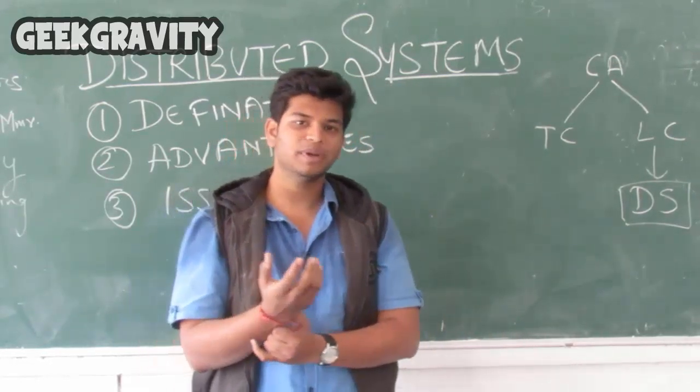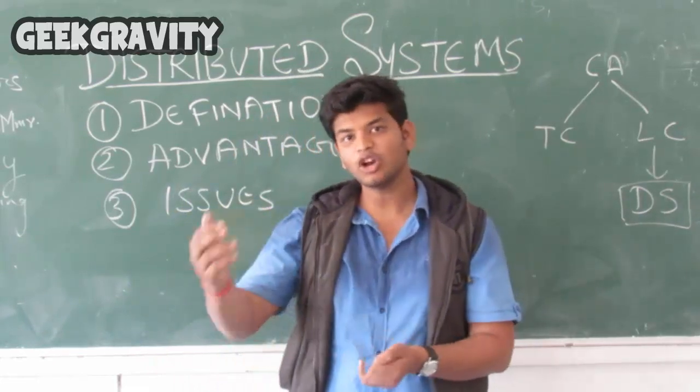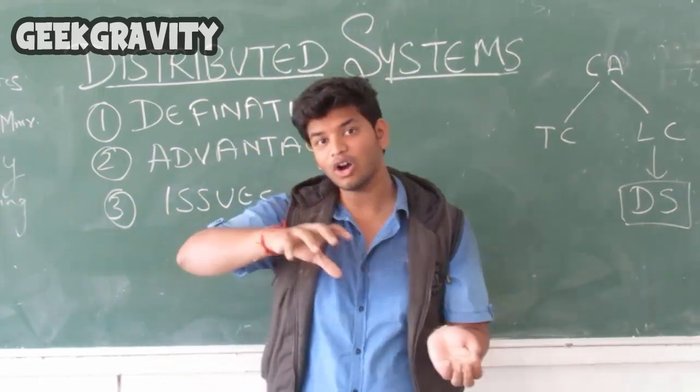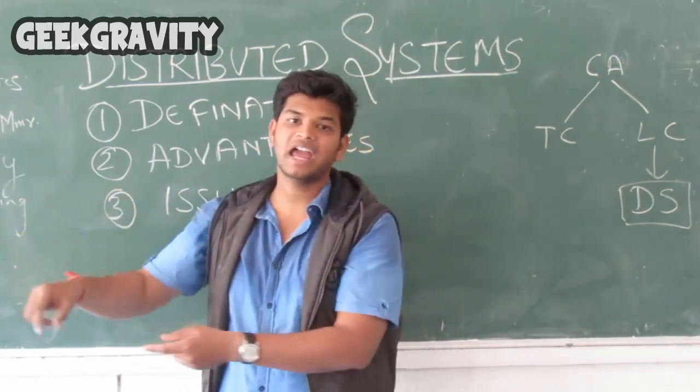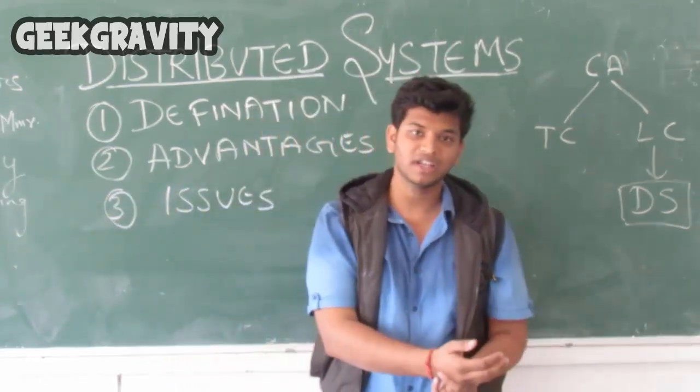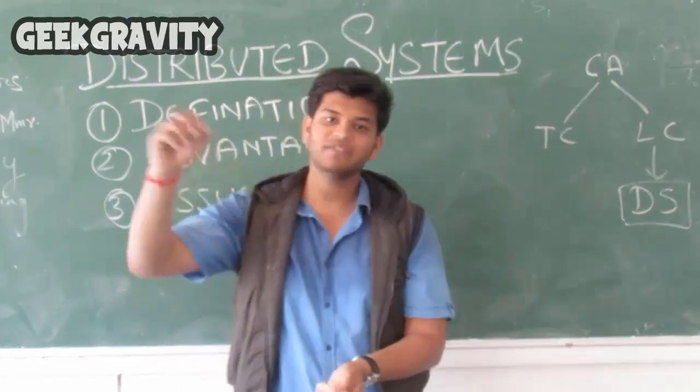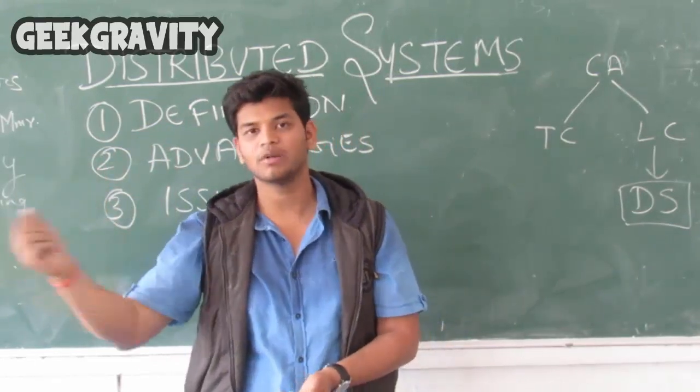If an employee has to print something, we do not give a separate printer for each one. Instead, we use one printer and connect all the systems to that printer. Whenever an employee gives a print command, a queue is maintained in the printer pool and jobs are served one by one.